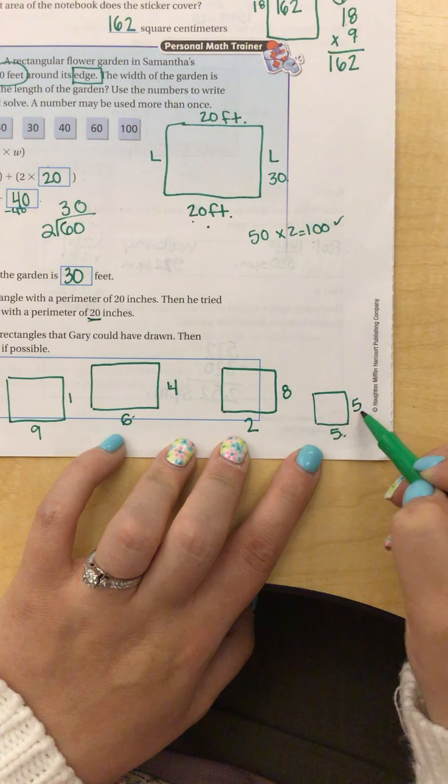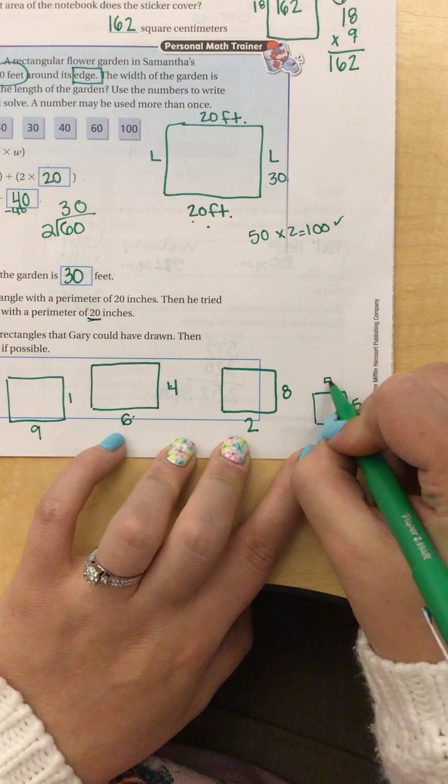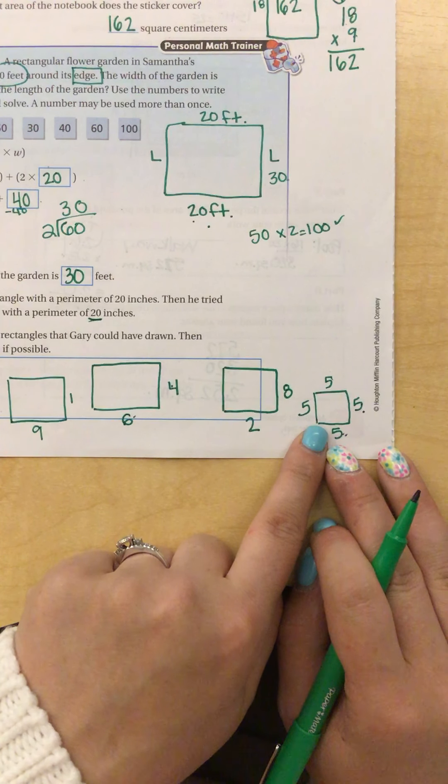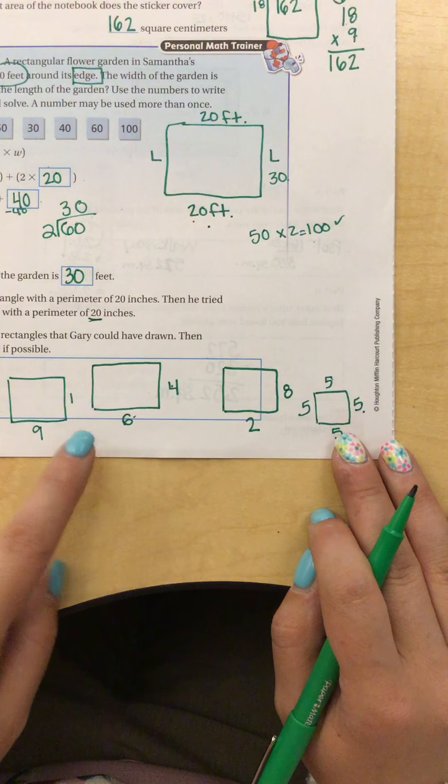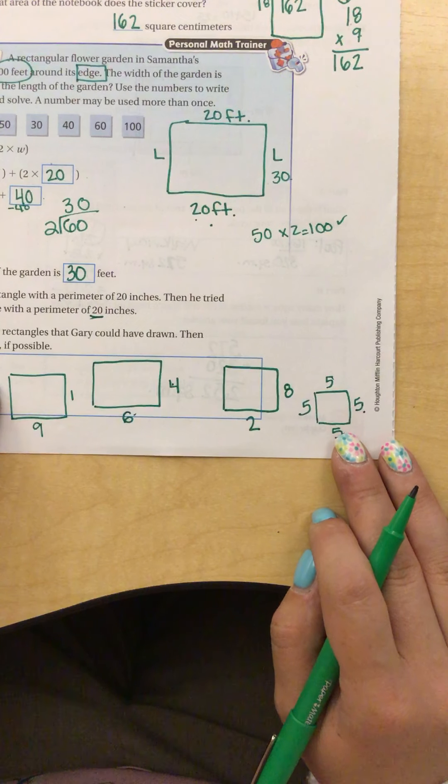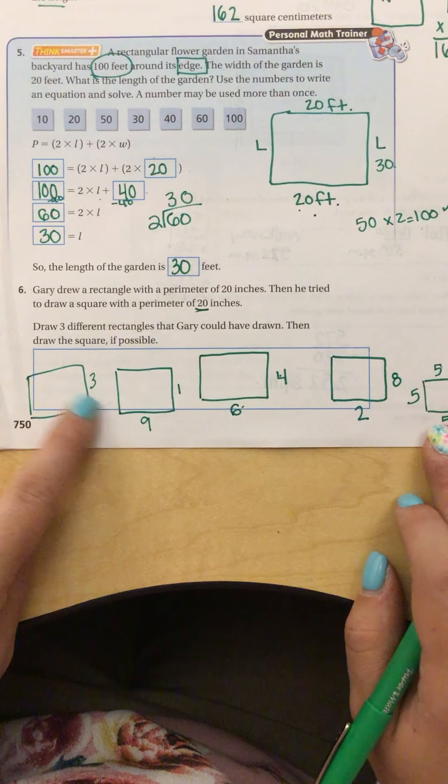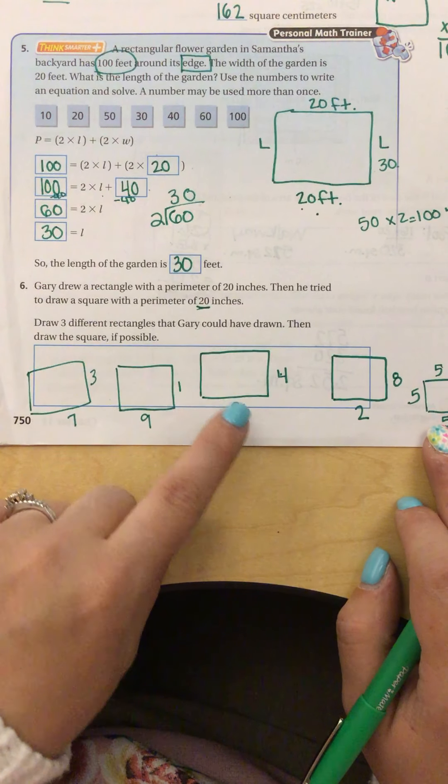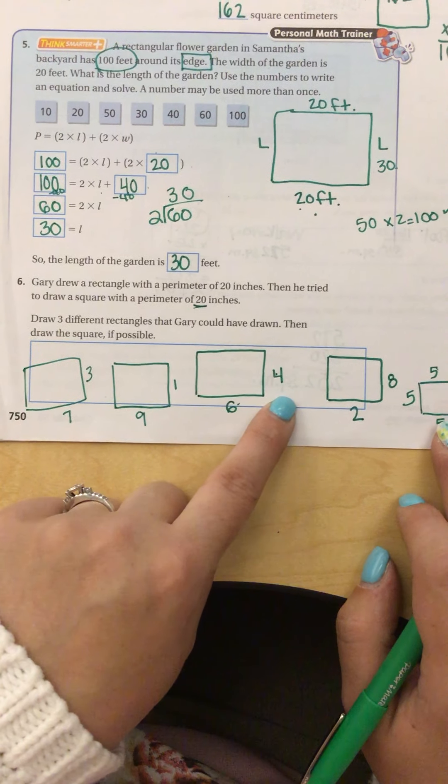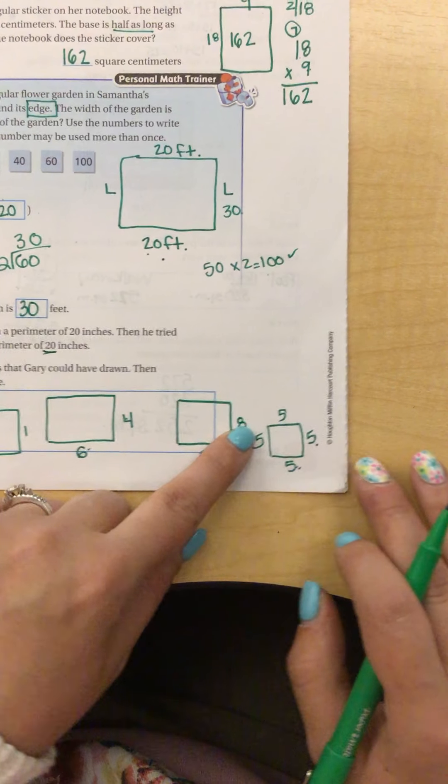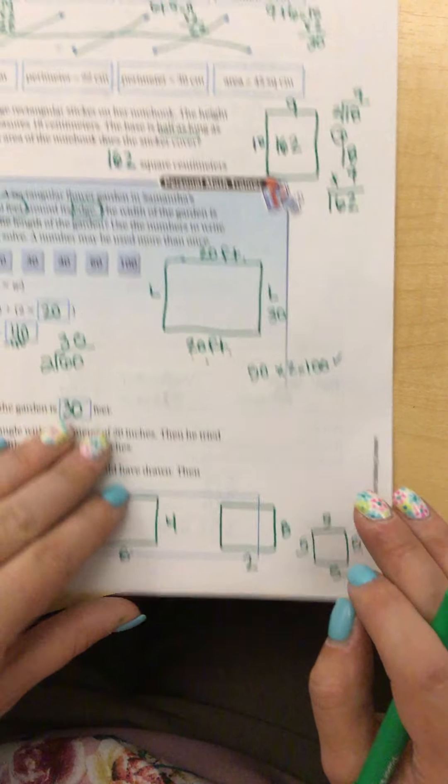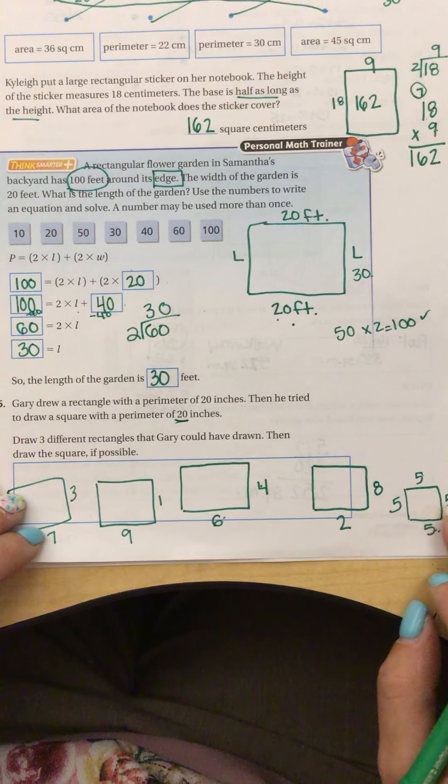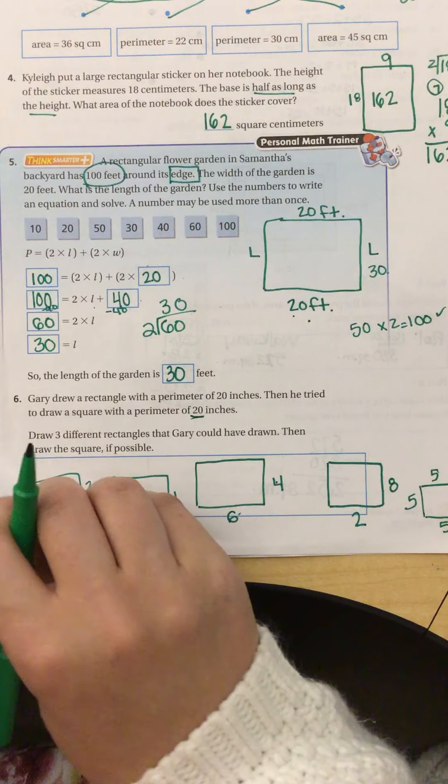And then one more I could do is 5 and 5 make 10. And I know that if the length and the width are the same, then that is a square. So these are all the different combinations that would equal a perimeter of 20. And I know that because 7 plus 3 is 10, and if I multiply that by 2, I get 20. 9 plus 1 is 10 times 2 is 20. 6 plus 4 is 10 times 2 is 20. 2 times 8 is 10 times 2 is 20. And 5 times 5 is 10 times 2 is 20. So those are all the different combinations that we could make a rectangle that has a perimeter of 20.